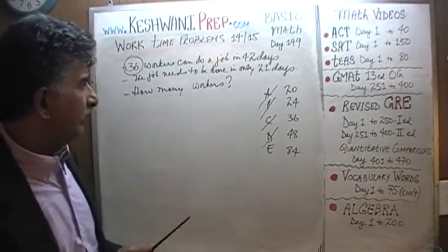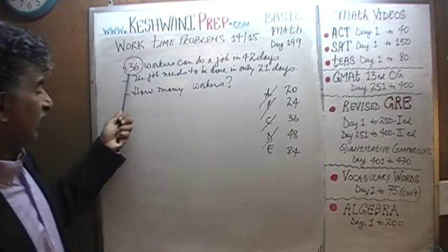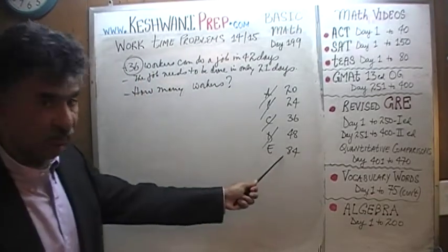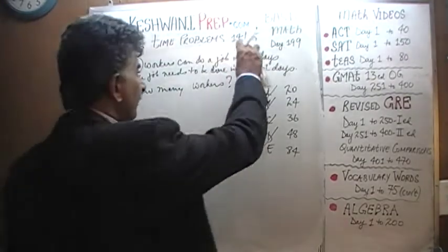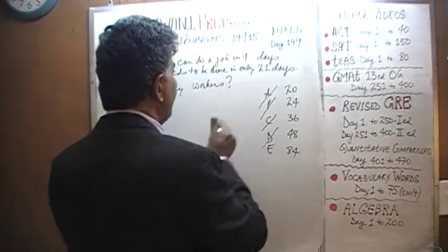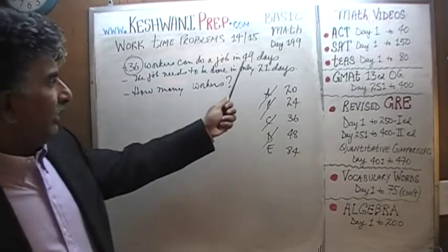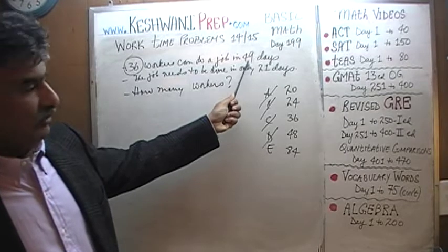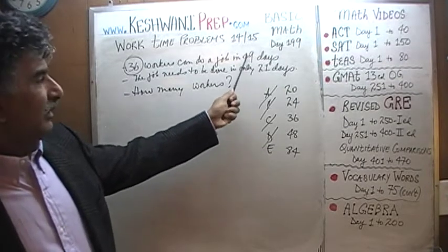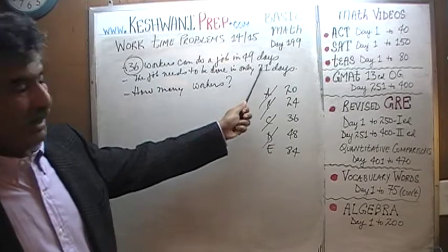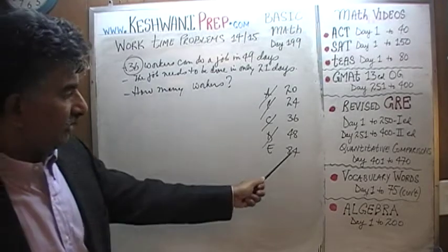It has to be more than 70, and it's not going to be 72. 72 would have been the correct answer had the original time been 42 days. But it doesn't take 42 days — it actually takes 49 days. If the regular job takes 49 days and you give me less than half the amount of time, I will need more than twice the workers. More than twice the workers points us to 84 right there.